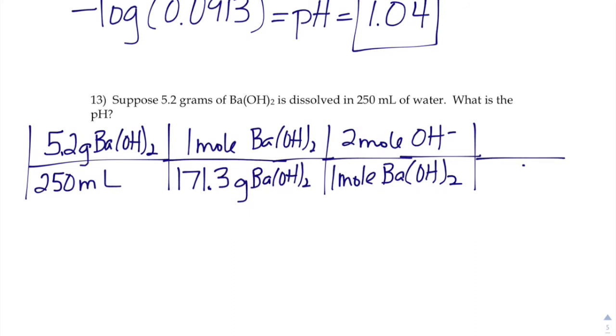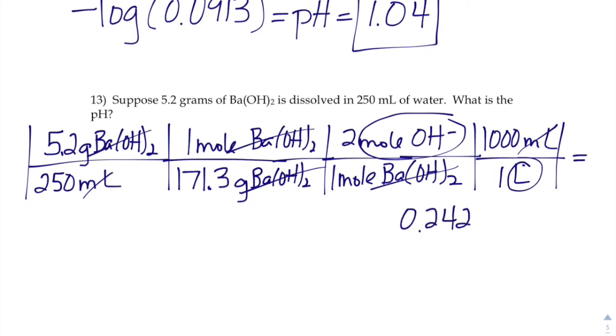And then, well, now we're at moles per milliliter—we need moles per liter. So I'll tack on that one last little moles per liter thing. Everything would end up canceling out except our moles of hydroxide per liter, so our hydroxide concentration is 0.2428. That's the OH⁻.